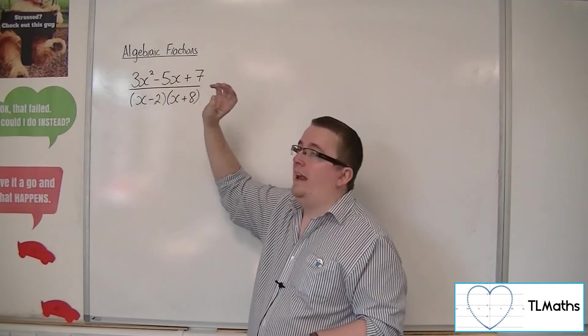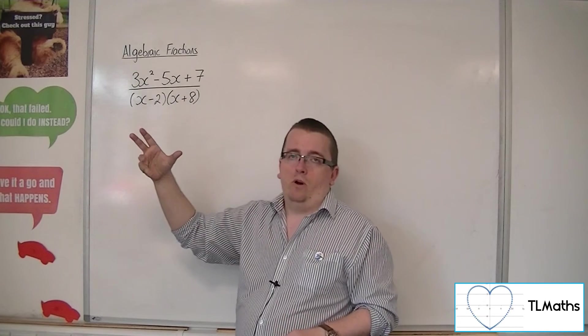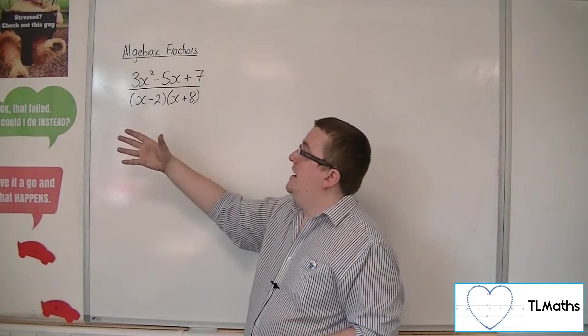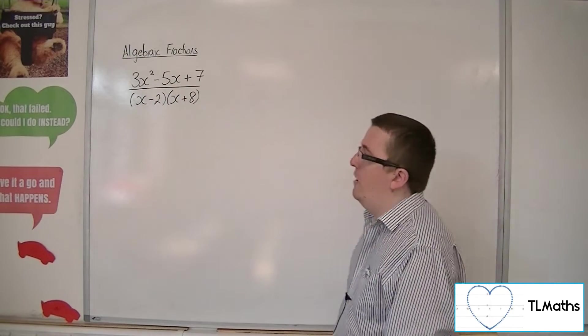The fact that it's got this x squared bit there is what is causing it to be improper. It could be x cubed, x to the 4, x to the 5, whatever. That would still make it improper. I would need to have just a linear term in the numerator to make it a proper fraction.